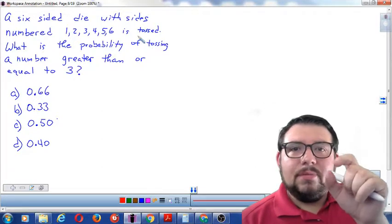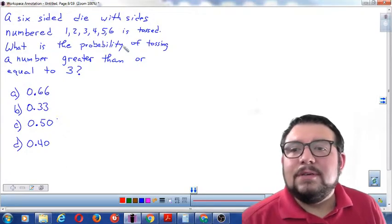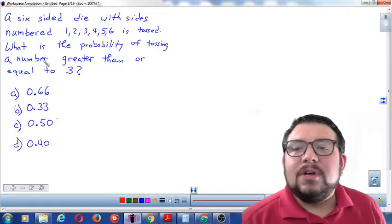A die is the little cube that you use when you play Monopoly or other board games. And it has numbers on it, right? 1 through 6. I think we've all seen one. What is the probability of tossing a number greater than or equal to 3?